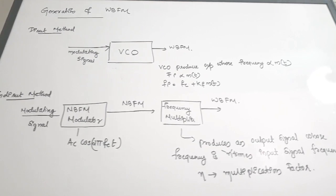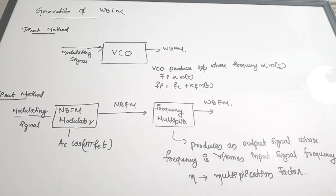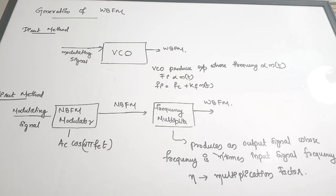In this video we have discussed the generation of narrow band FM and wide band FM signals. The main difference to keep in mind is that one operates at a low frequency range and the other at a high frequency range. To change the frequency, we use a frequency multiplier. For the basic concepts of FM, please watch the video on frequency modulation basics.